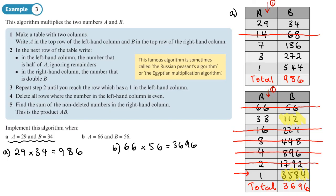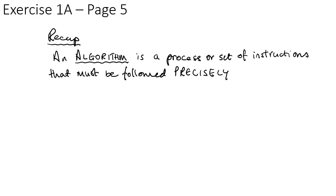The remaining numbers to add are 3584 plus 112, which gives 3696. So 66 times 56 equals 3696. Checking on a calculator: 66 times 56 confirms 3696 — the algorithm works.